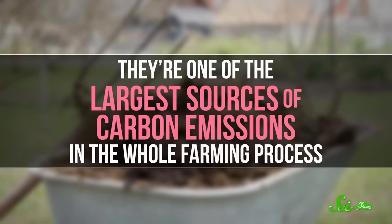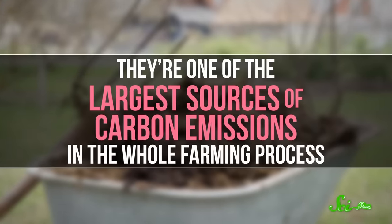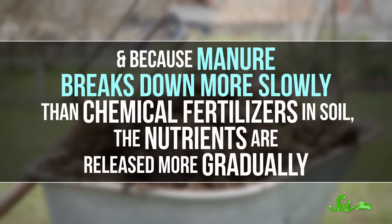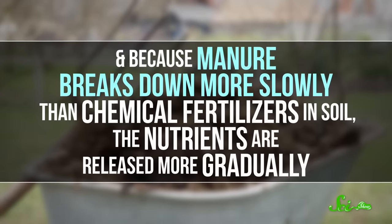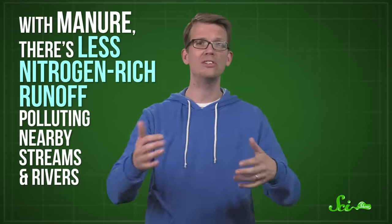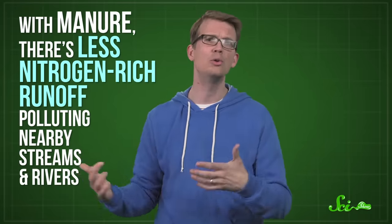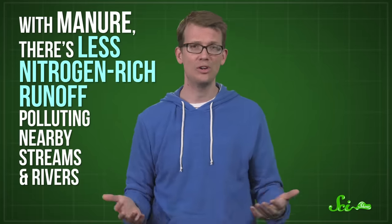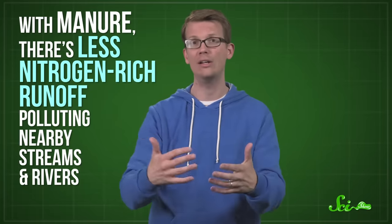They're one of the largest sources of carbon emissions in the whole farming process. And because manure breaks down more slowly than chemical fertilizers in soil, the nutrients are released more gradually. So with manure, there's less nitrogen-rich runoff polluting nearby streams and rivers, which lets algae overgrow and kill off fish and other creatures. Less runoff is one of the big selling points of organic agriculture.